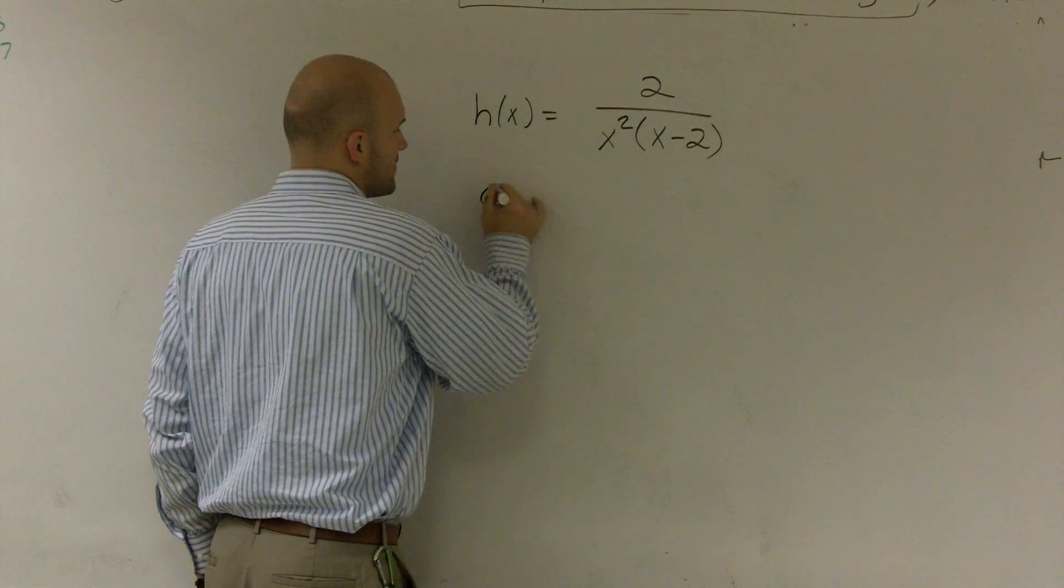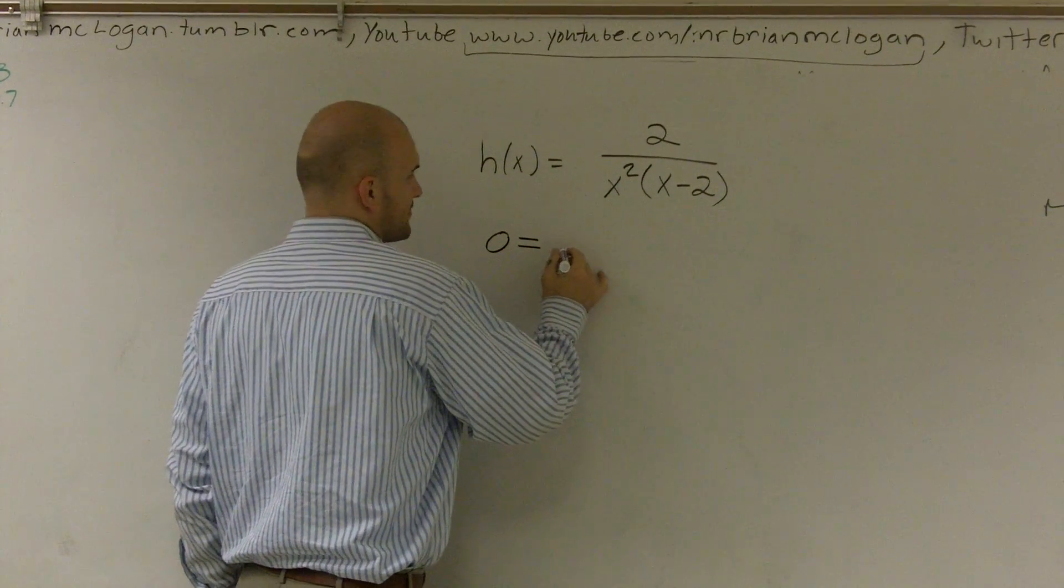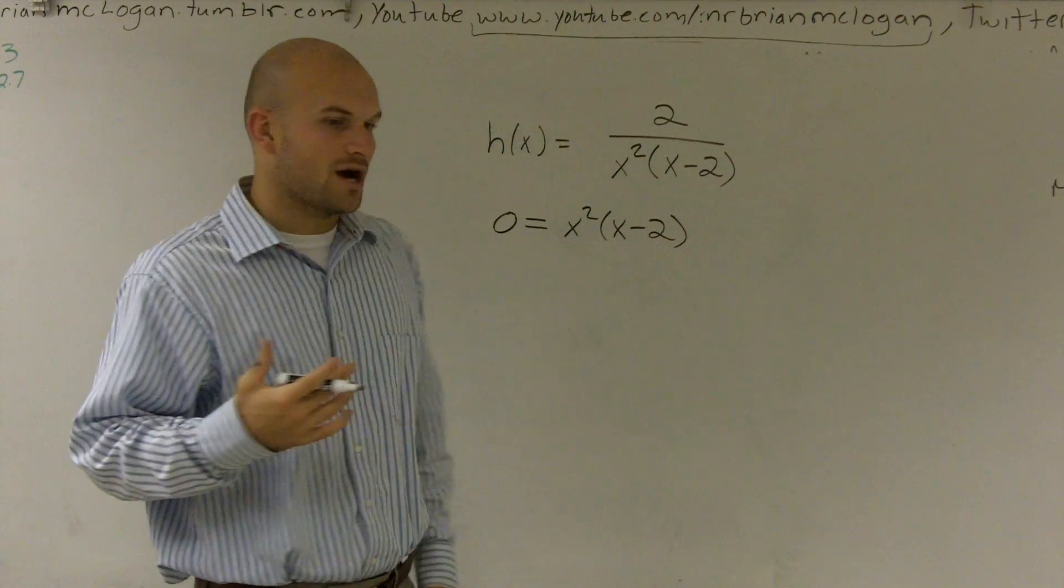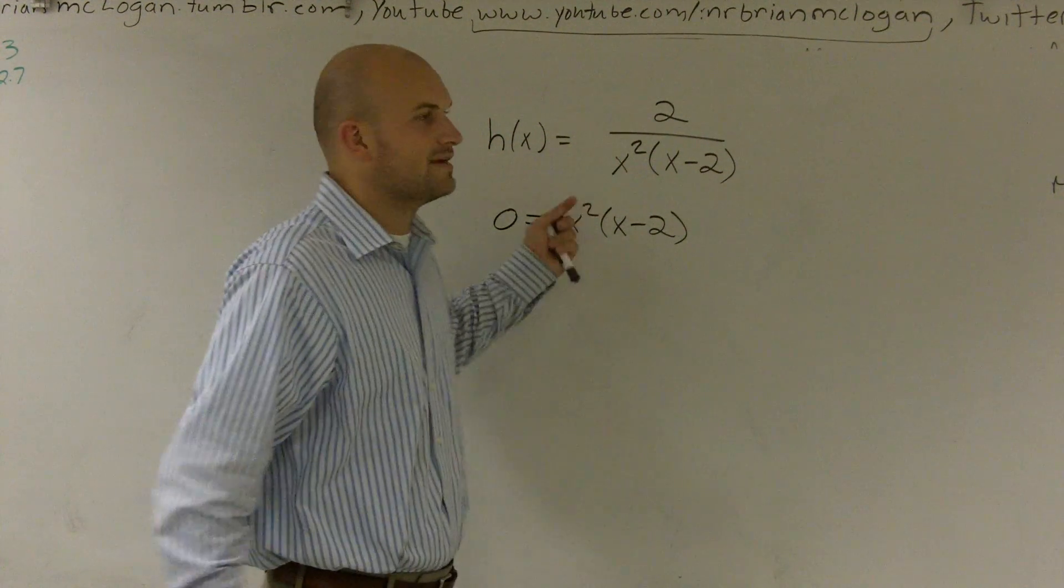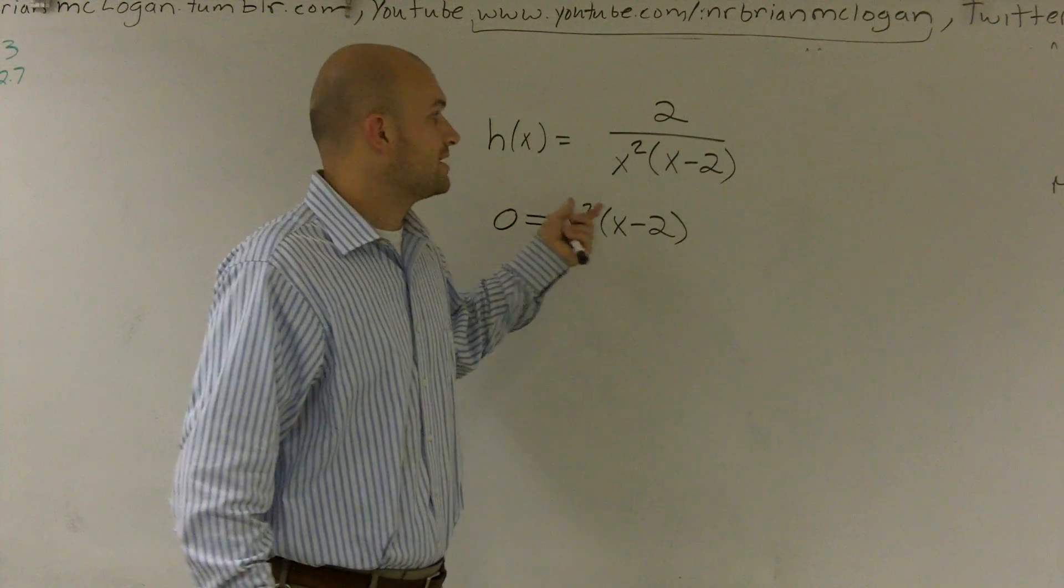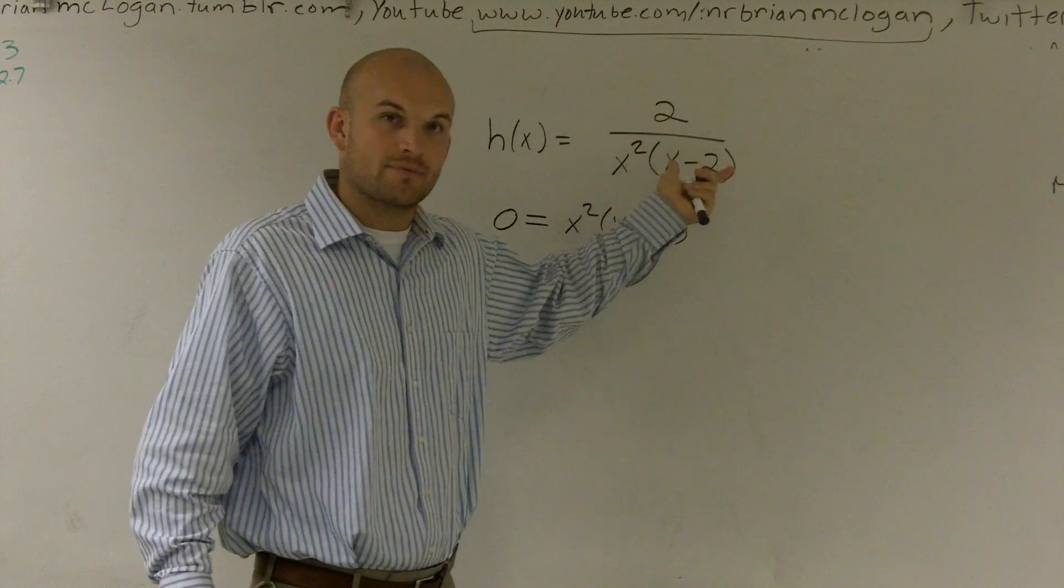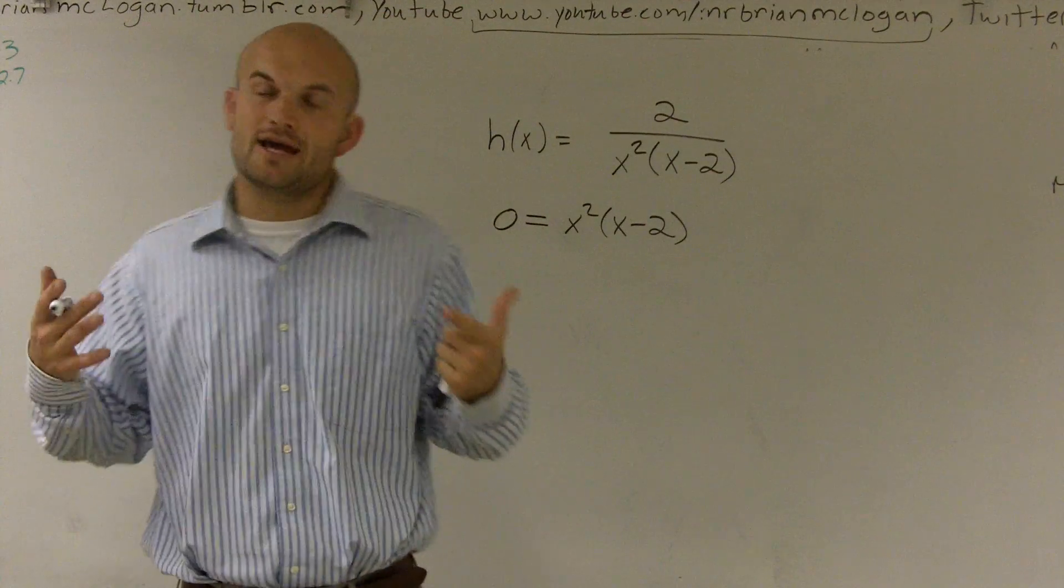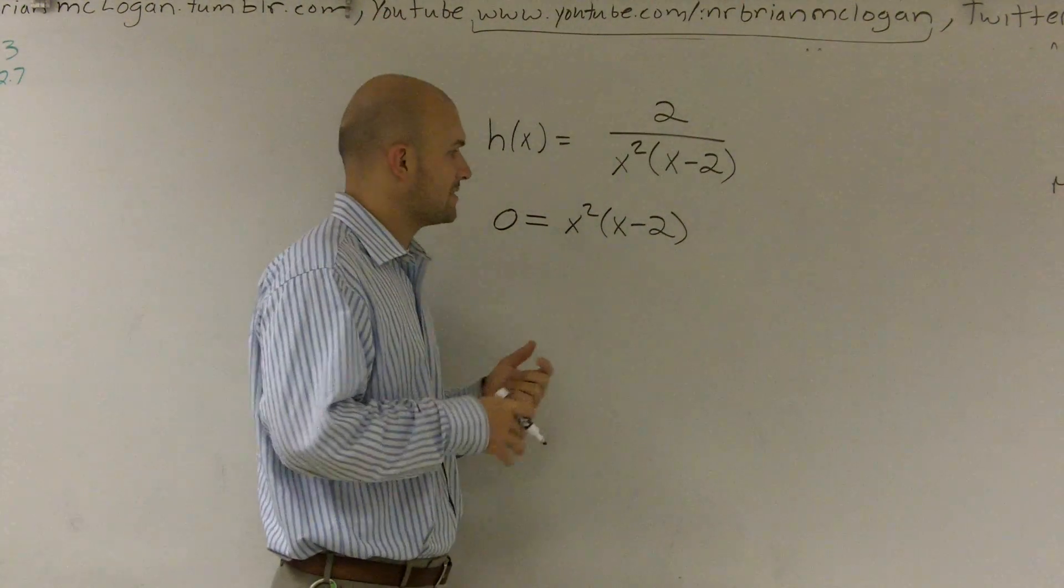So we have 0 equals x squared times x minus 2. Now the reason why I said it can never cross, well, I can't have an x value equal to 0 because I can't have 0 on the bottom of my fraction. Therefore, I know that my domain is never going to include a fraction with a 0 as the denominator.